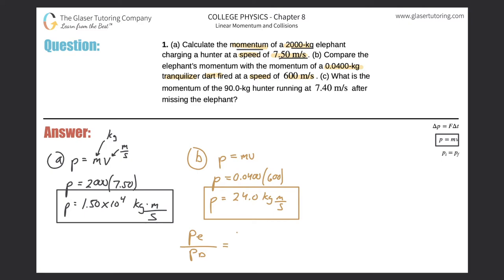So the momentum of the elephant was 1.50 times 10 to the fourth, divided by now, the momentum of the dart, which was just 24. Plugging it into the calculator, we get a value of about 625. So what this means is that the momentum of the elephant is about 625 times larger than that of the dart.